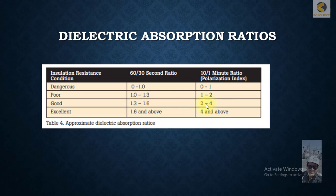If the polarization index is between 2 and 4, or the second ratio is 1.3 to 1.6, then the condition is good.